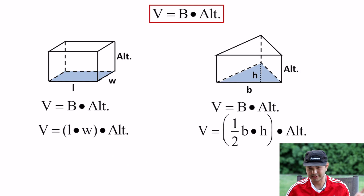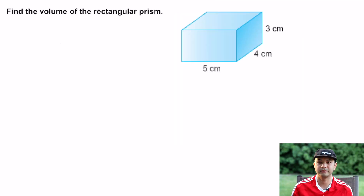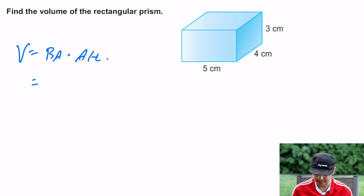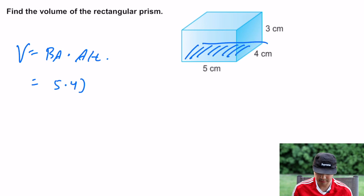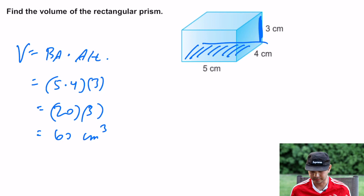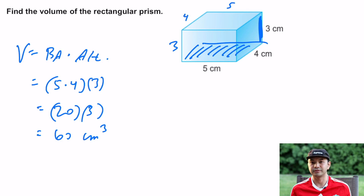Length times width times altitude for a rectangular prism. Find the volume of the rectangular prism — this is five by four by three. Volume is the base area times the altitude. The base area is five times four, and the altitude is three, so it's 20 times three, which gives you 60 centimeters cubed. You have to be careful that you're not multiplying the wrong things — you multiply the length, the width, and the altitude.